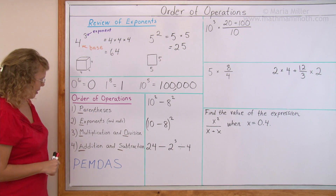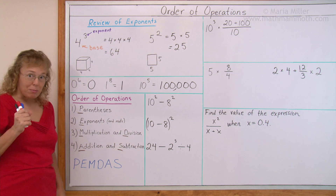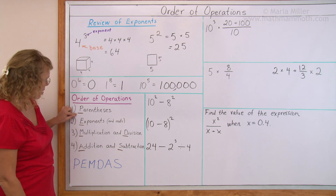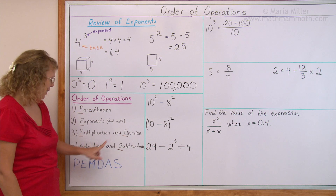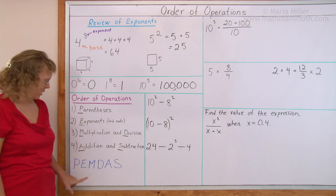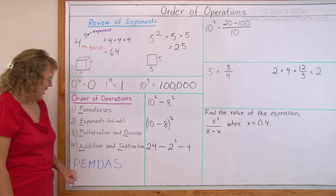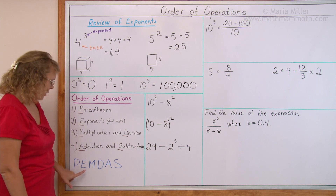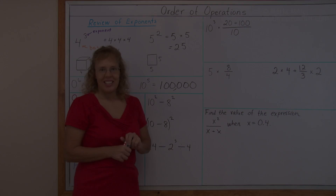There is a little mnemonic to remember the order of operations. If you take the letters P, E, M, D, A, and S, you get PEMDAS — and that stands for: Please Excuse My Dear Aunt Sally.